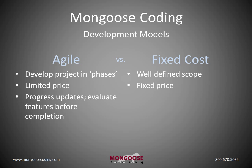The biggest difference between the models is the scope definition. Under the fixed cost model, the scope is very well defined before starting the project. Under the Agile model, the scope is partially defined before starting and partially defined throughout the project.